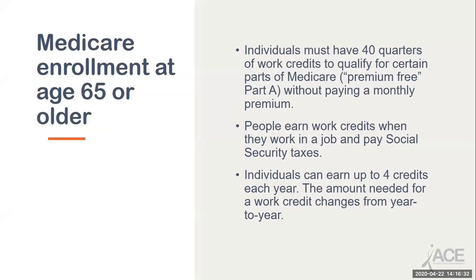Any U.S. citizen or eligible legal resident qualifies for Medicare when they turn 65. To qualify for Medicare Part A hospital services without paying a monthly premium, individuals must have at least 40 quarters of Social Security work credits. People earn work credits while working in a job and paying Social Security taxes. Work credits are based on your total yearly wages or self-employment income, and generally individuals earn up to four credits each year. 40 quarters or credits equals about 10 years' worth of work.